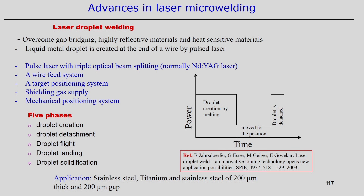There are five phases in laser droplet welding. First is droplet creation, where maximum laser power is used to melt the wire tip. Second is droplet detachment — once created, the droplet detaches from the wire. Third is droplet flight, where the droplet is transported from the end of the wire to a particular position. Fourth is droplet landing — where the droplet lands on the substrate material at the correct position. Fifth is solidification.